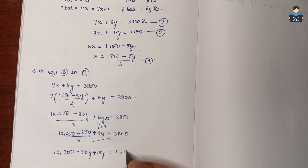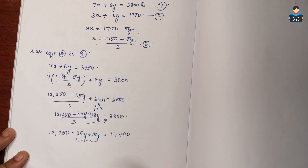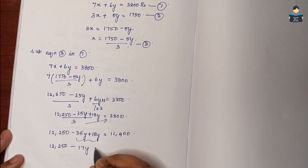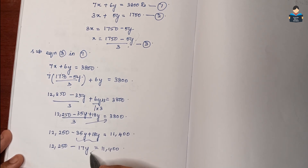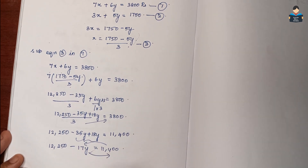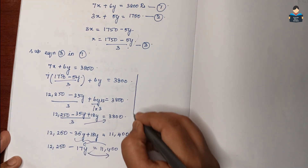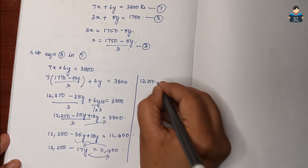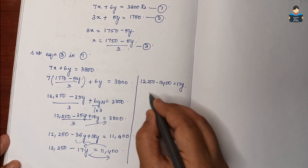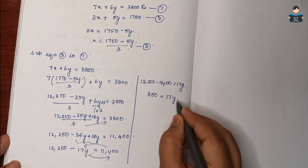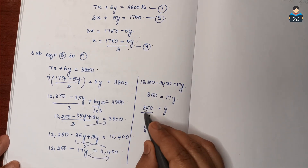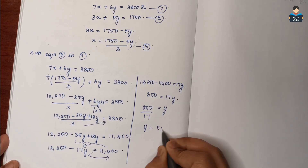So, 12250 − 17y = 11400. Now subtracting: 12250 − 11400 = 17y, so 850 = 17y, therefore y = 850/17 = 50. So y equals 50.